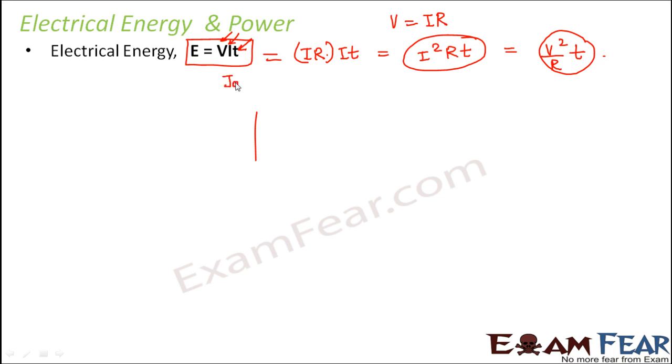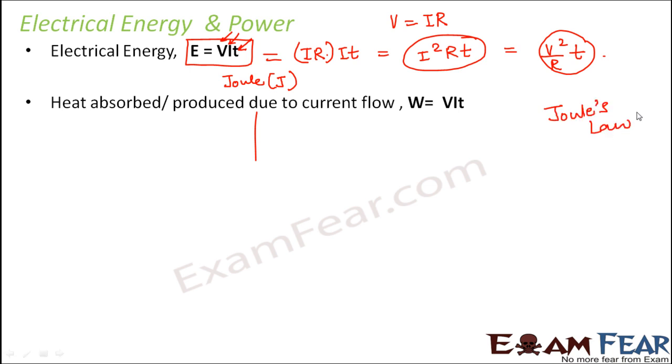Now how do we measure electrical energy? It is measured in joules written as capital J. Now when we talk about electrical energy it becomes important to talk about Joule's law of heating which states that electric current produces or absorbs thermal energy or heat energy and the heat absorbed or produced due to flow of current is given by W equals VIT. So exactly the same expression as this one. So basically electrical energy is equal to VIT which is also equal to the amount of heat which is produced or absorbed due to flow of current. So this is known as Joule's law of heating.